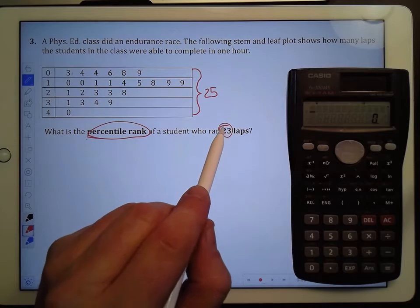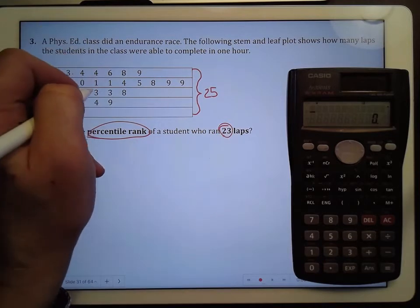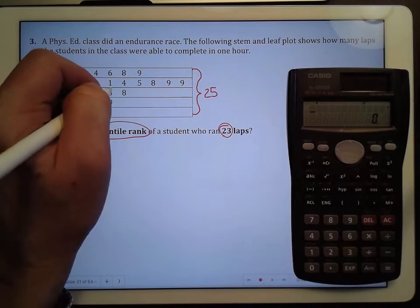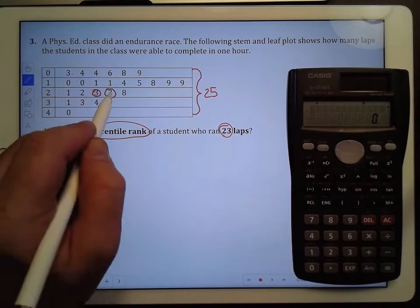And the number 23, which is the significant one because we're being asked about it, is these two right there. 23 once and 23 twice.